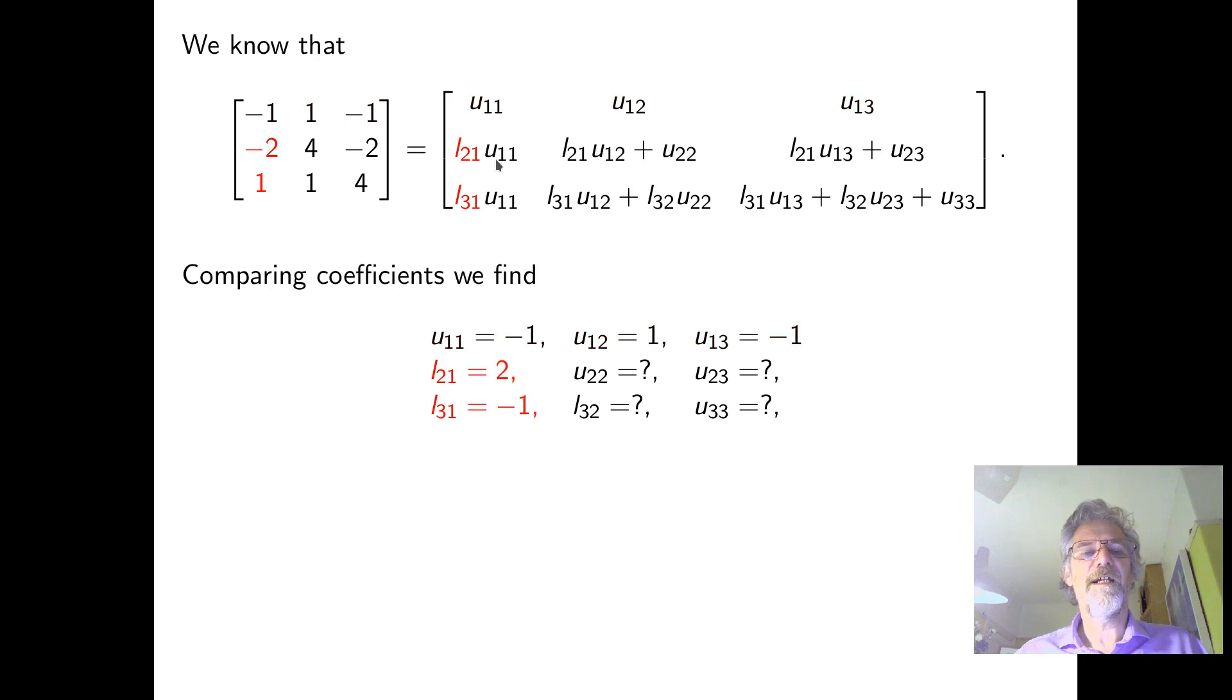U11 is minus one. U12 is one. U13 is minus one. We've got them. OK, so we've got those U's. And then look at the next row. Can we find L21? Well, L21, U11 is minus two. And U11 is minus one. So L21 is two. Let's look at the L. You see a pattern here. Look, I'm going down this column. You see. So now let's look at this one. So L31 is minus one. So we're doing something quite similar to Gaussian elimination.